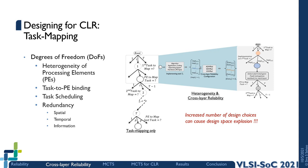However, designing with cross-layer reliability also increases the design space exploration complexity. Since cross-layer reliability increases the degrees of freedom for any system-level design process, the joint optimization across these degrees of freedom results in exponential growth of the design space. For instance, if we consider the problem of task mapping on HMP SoCs, cross-layer reliability introduces the additional design decisions of selecting and configuring the fault mitigation methods for each layer, and that too for every task in the application.